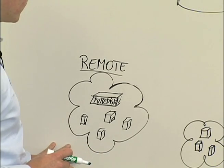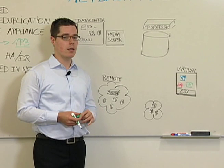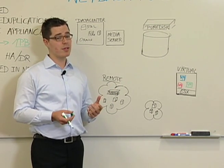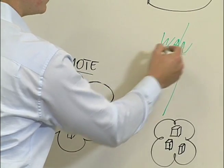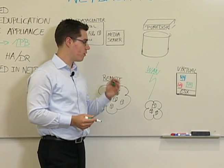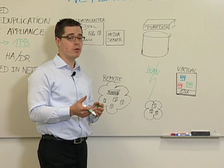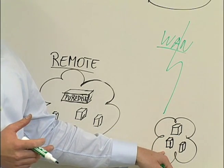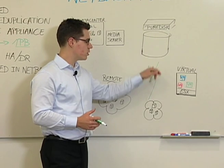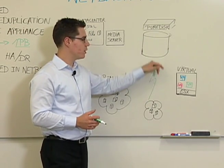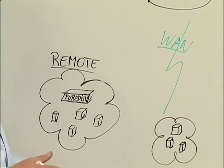For remote offices, the requirement is to centralize all your data to the data center and leverage existing network connectivity, which is typically very slow. WAN connections are very slow, so you need a more intelligent approach. What we offer is deduplication at the source level — you install a PureDisk client on the client in the remote site, deduplication happens before the data is transferred. All traffic is optimized and only unique data is transferred over the network, resulting in a lot of bandwidth savings.